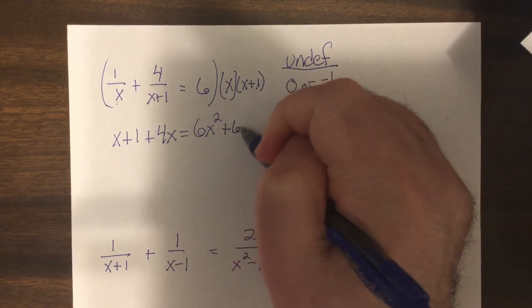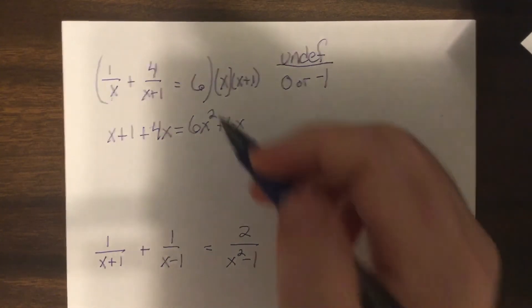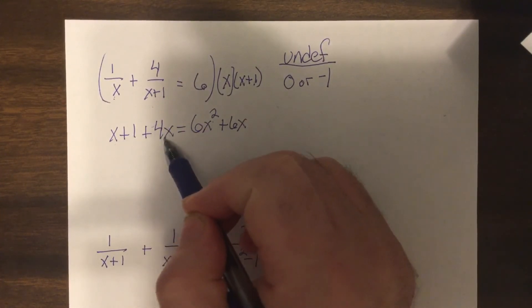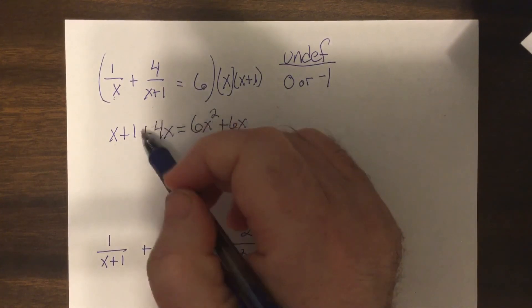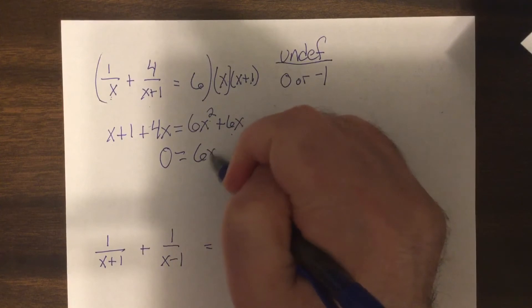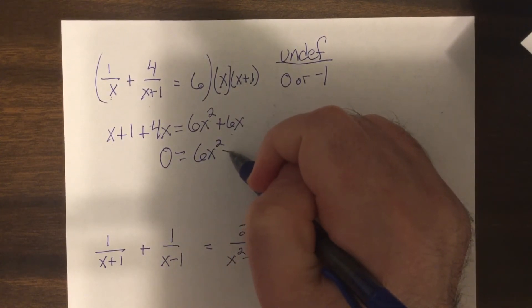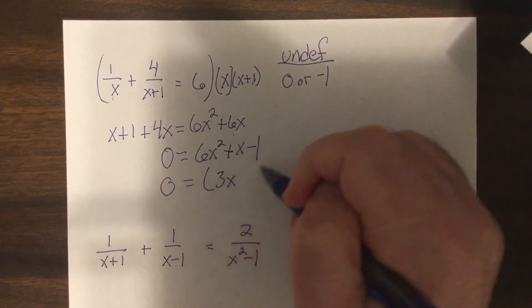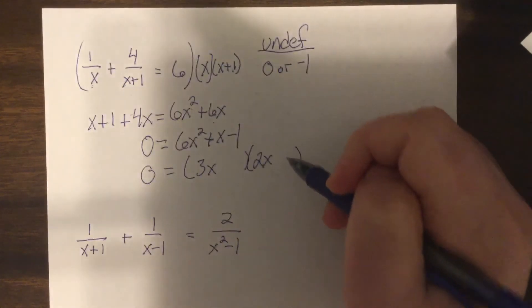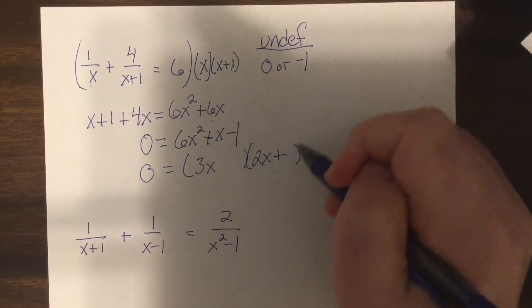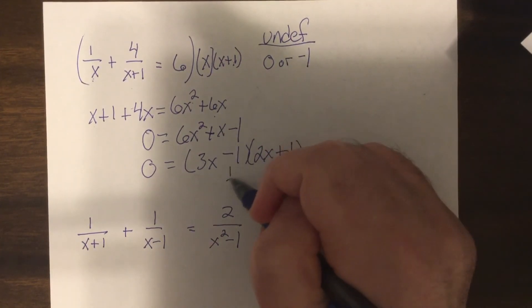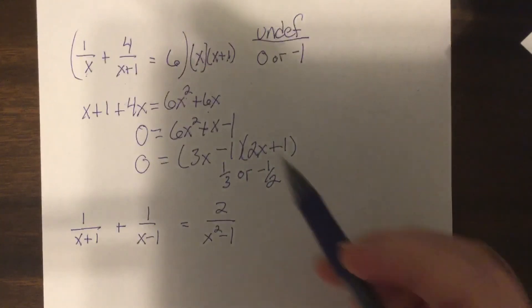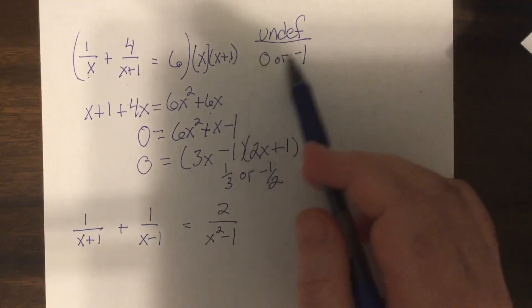So since the power is 2, I have to get everything on one side, either complete the square or quadratic formula. So x and 4x is 5x. I'm going to subtract the x and subtract the 1, so I'd have 6x² plus x minus 1. So let's see, it's 3x and 2x. Again, quadratic formula might be a little faster, so it'd be 1/3 or negative 1/2. And again, okay to use because it's not part of my undefined.